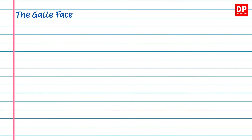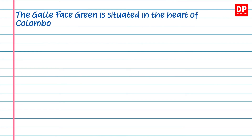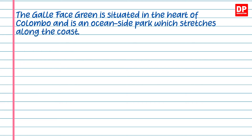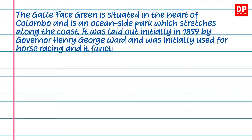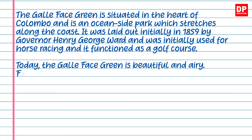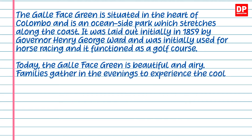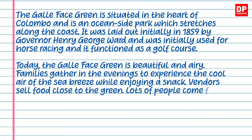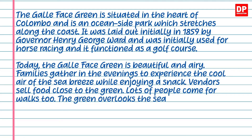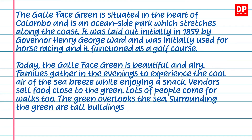The other picture is of the Galle Face Green. Since I live in Colombo and go there very frequently, let me describe it. The Galle Face Green is situated in the heart of Colombo and is an ocean-side park which stretches along the coast. It was initially laid out in 1859 by Governor Henry George Ward and was used for horse racing and as a golf course. Today it is beautiful and airy — families gather in the evenings for the cool sea breeze while enjoying a snack, vendors sell food nearby, and the green overlooks the sea, surrounded by tall buildings and hotels.